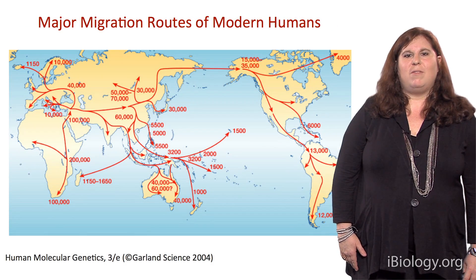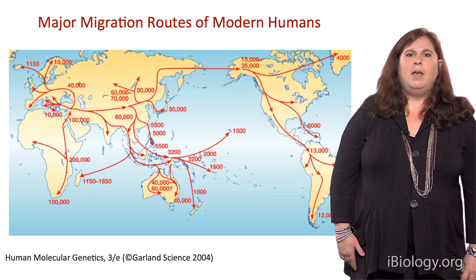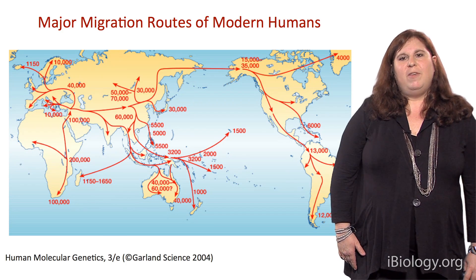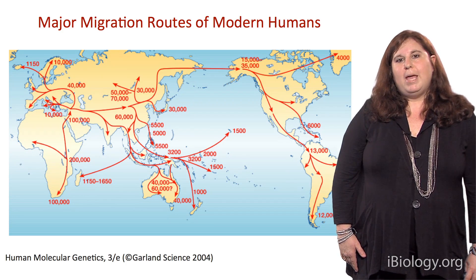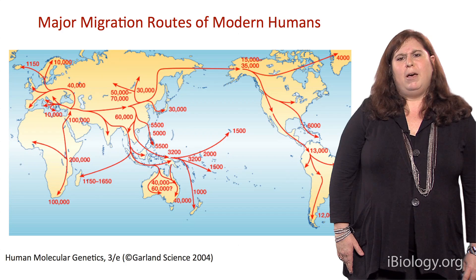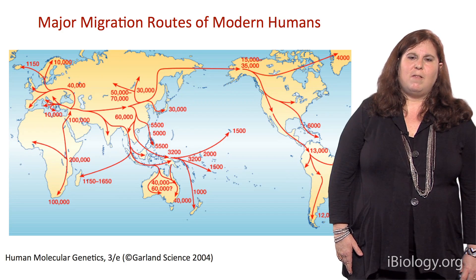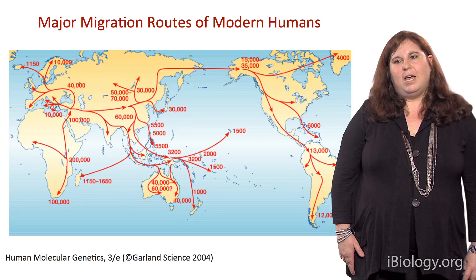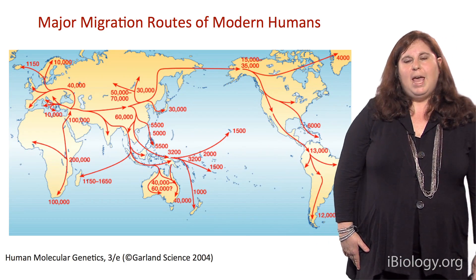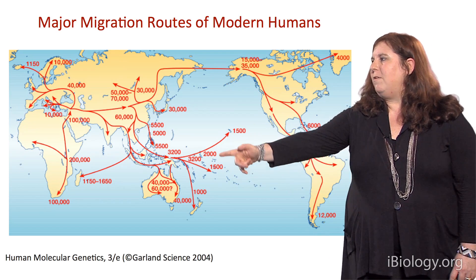After modern humans arose in Africa within the past 200,000 years, one or a few small groups of individuals migrated across the rest of the globe within the past 50,000 to 100,000 years. There were no people in Europe until about 40,000 years ago. Modern humans crossed the Bering Straits and went into the Americas within the past 30,000 years. The earliest migration event was actually into Australomelanesia, dated to about 40,000 to 60,000 years ago, and then we have much more recent migration events, such as into the Pacific Islands within the past few thousand years.